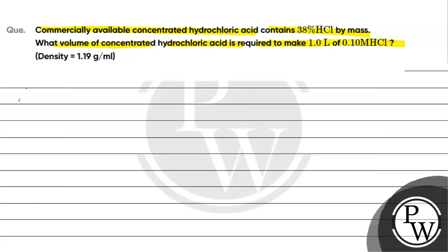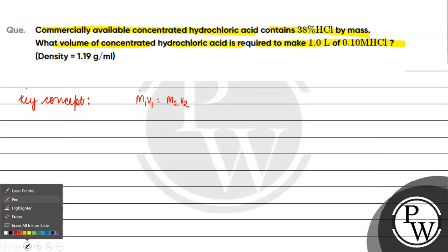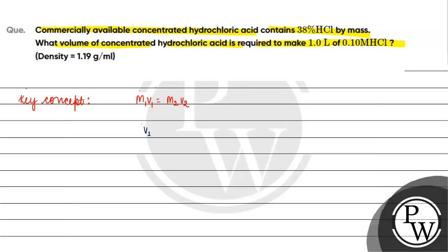The key concept for this question is that we have to find the volume of concentrated hydrochloric acid required to make 1 liter of 0.10 molar HCl. For that, we will use the formula M1V1 = M2V2. V1 is the volume of HCl which we have to find.